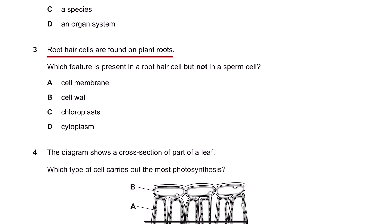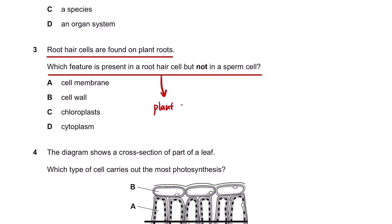Root hair cells are found on plant roots. Which feature is present in a root hair cell but not in a sperm cell? Root hair cells are plant cells, and sperm cells are animal cells.